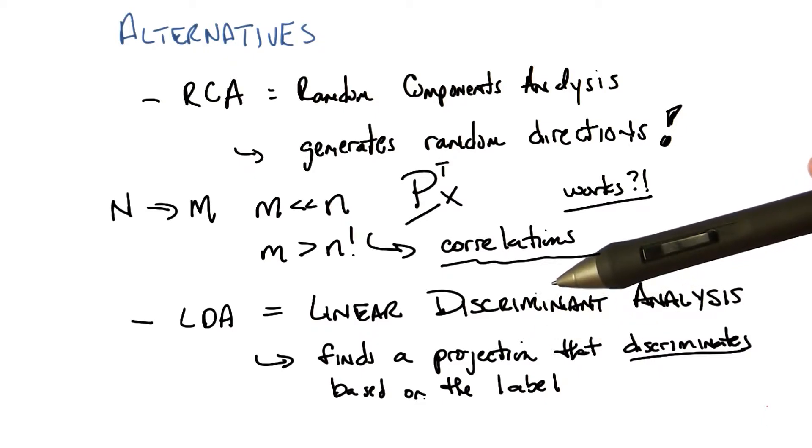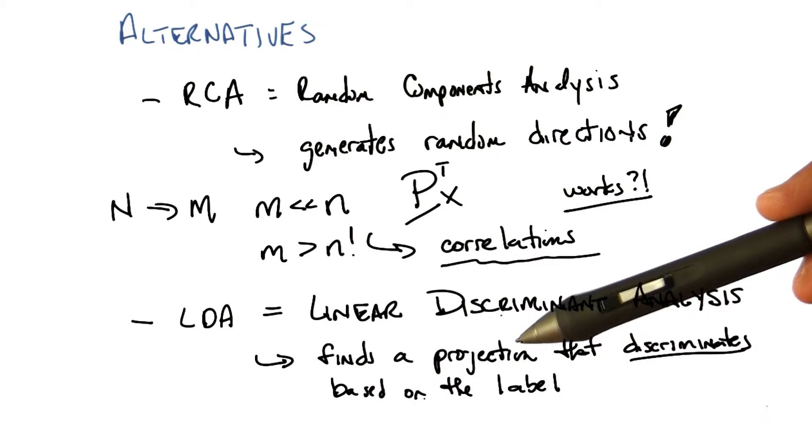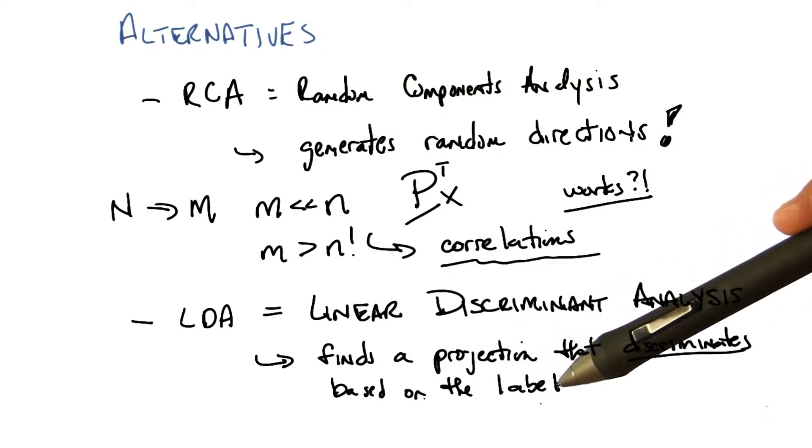You take advantage of the label and you come up with a transformation such that you will, in fact, project things into different clumps or clusters, or otherwise separate them based upon their label.